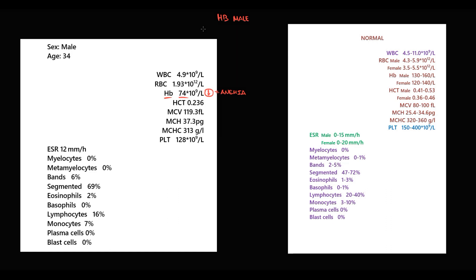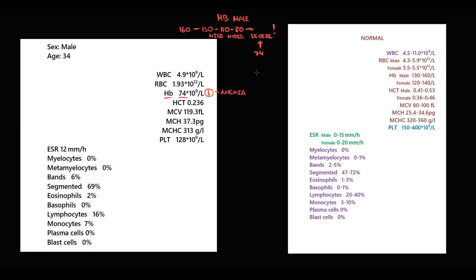Normal hemoglobin level for males is 130–160. From 110 to the lower limit of normal is mild anemia. From 80 to 110 is moderate anemia, and lower than 80 is severe anemia. In this case, hemoglobin value is 74, so it's severe anemia.